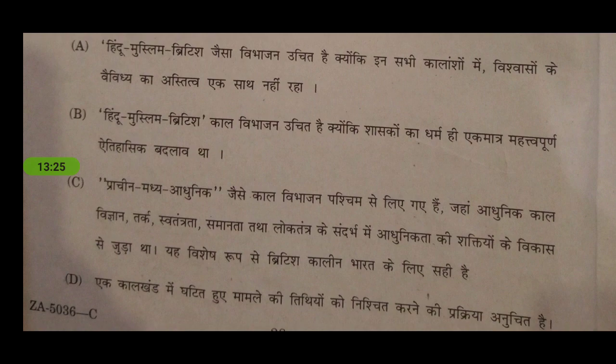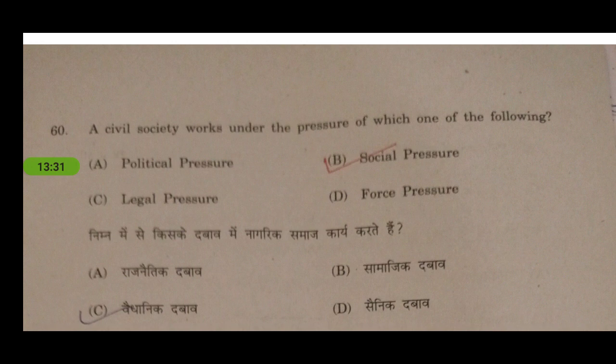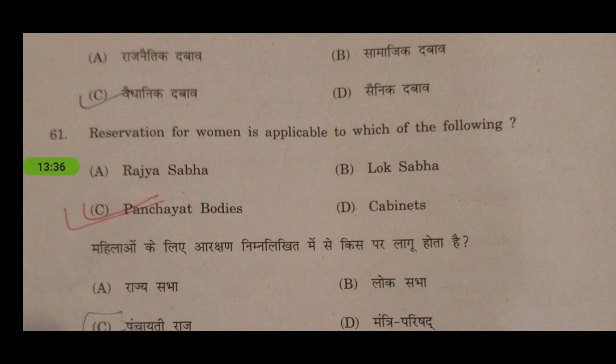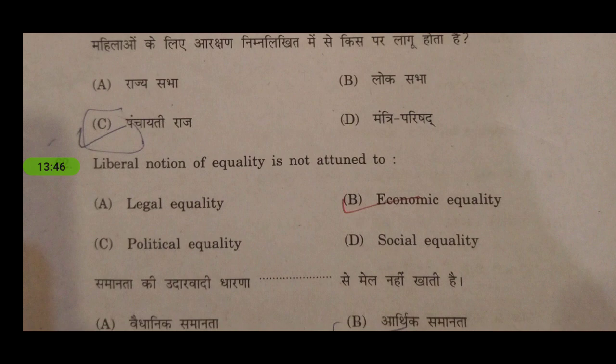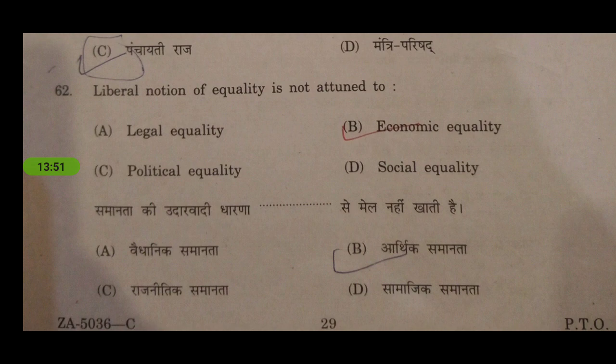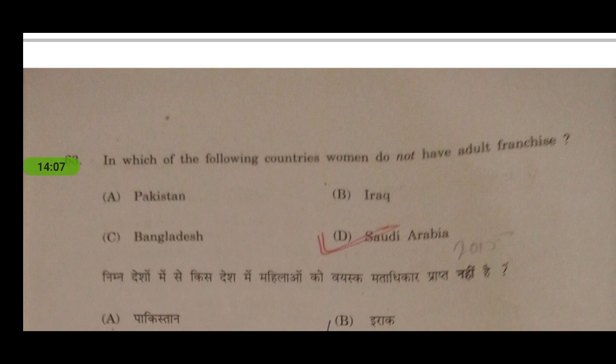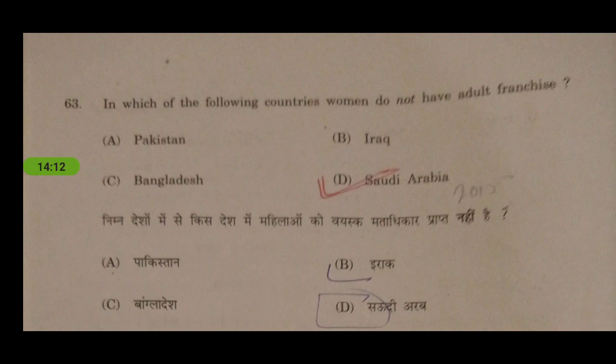Civil society works under which pressure? The answer is social pressure. Reservation for women is applicable to which of the following? Currently we have this reservation only in panchayat bodies; in the Lok Sabha it is still pending. Regarding the liberal notion of equality: liberals consider economic equality, but it gets lesser weightage — you can find the answer yourself. Which country's women do not have adult franchise? Given this paper is from 2016, the answer is Saudi Arabia, as until 2015 they had not got this right.